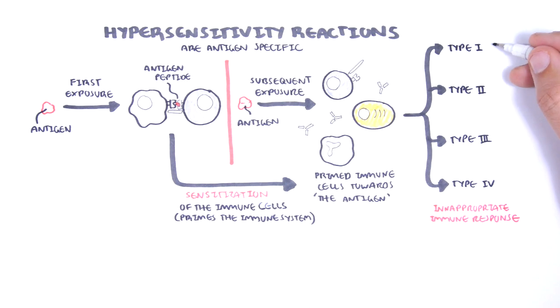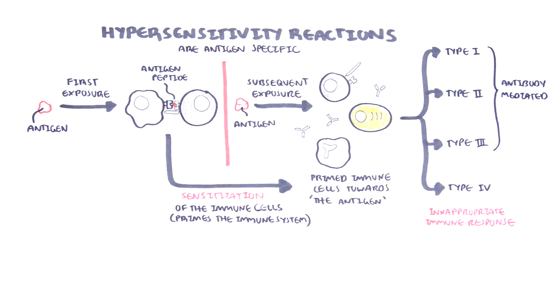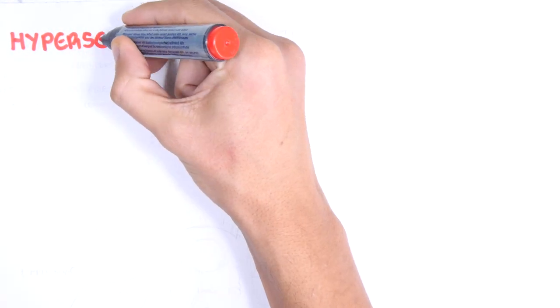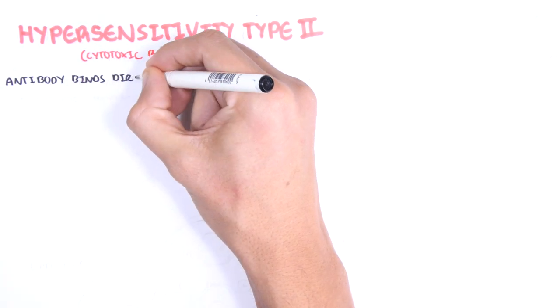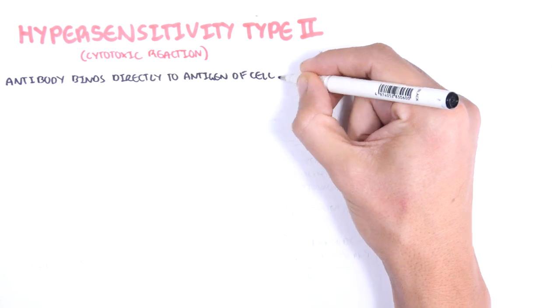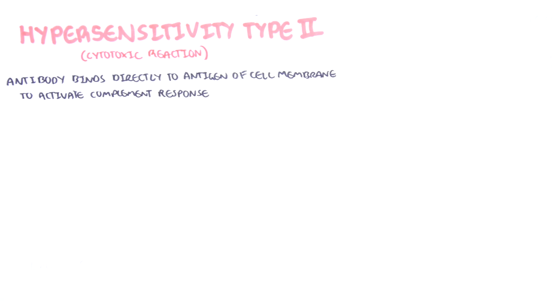Type 1, type 2, and type 3 hypersensitivity reactions are antibody-mediated, whereas type 4 is a cell-mediated hypersensitivity reaction. Now let's talk about hypersensitivity type 2 reactions, also known as cytotoxic reactions, where antibodies produced bind directly onto antigens on the surface of plasma membranes and then activate the complement response. Complement proteins are circulating proteins that, when activated, lead to an inflammatory response against a particular target.